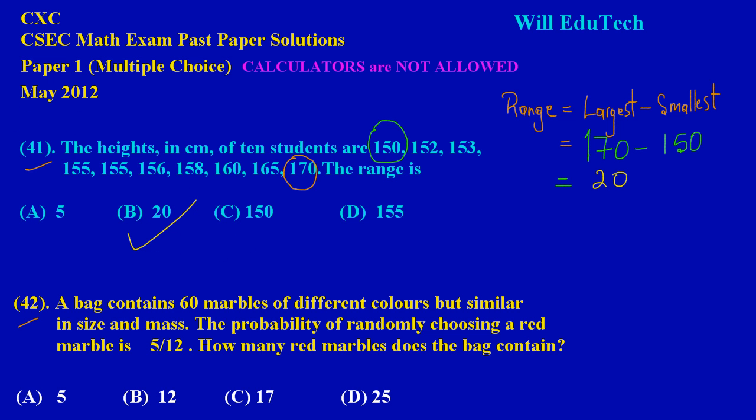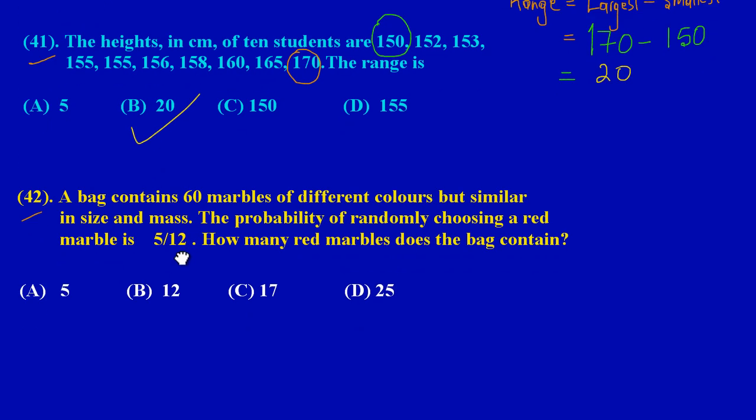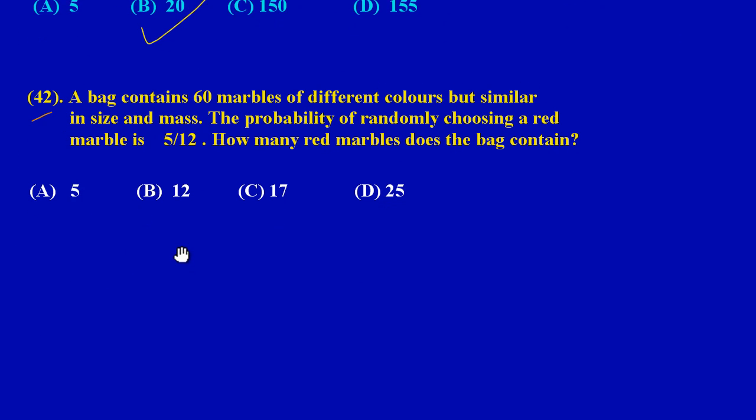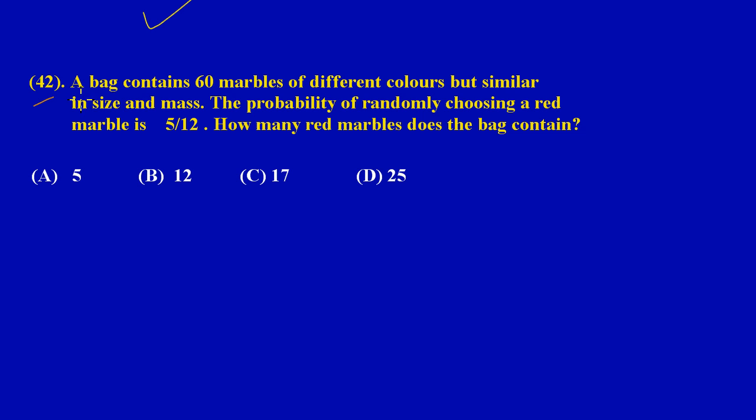Let's move on to question 42. Question 42 is simply saying here: a bag contains 60 marbles of different colors but similar in size and mass. The probability of randomly choosing a red marble is 5/12. How many red marbles does the bag contain? They are asking us to find the amount of red marbles that is in our bag. Let's do a quick sketch here on the side.